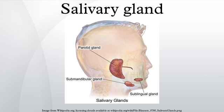Sublingual glands: The sublingual glands are a pair of major salivary glands located inferior to the tongue, anterior to the submandibular glands. The secretion produced is mainly mucus in nature; however, it is categorized as a mixed gland.